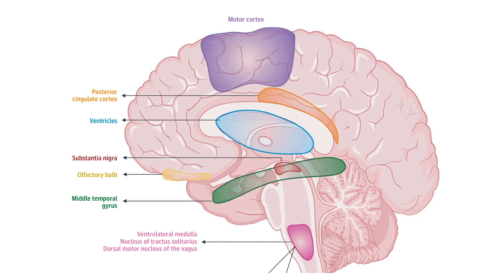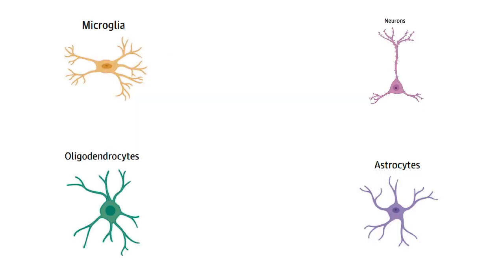Apart from these brain regions, the cells that carry the ACE2 receptors are the microglia, the neurons, the oligodendrocytes, and the astrocytes.